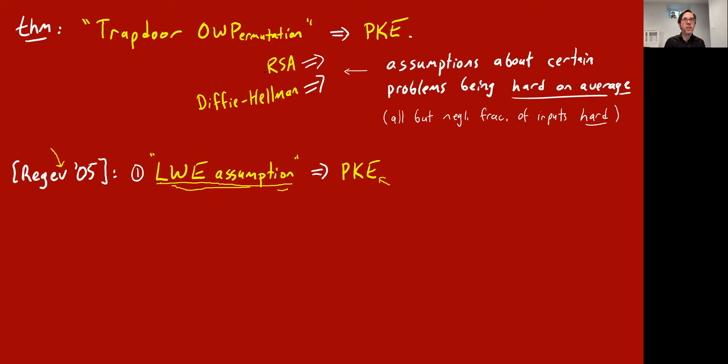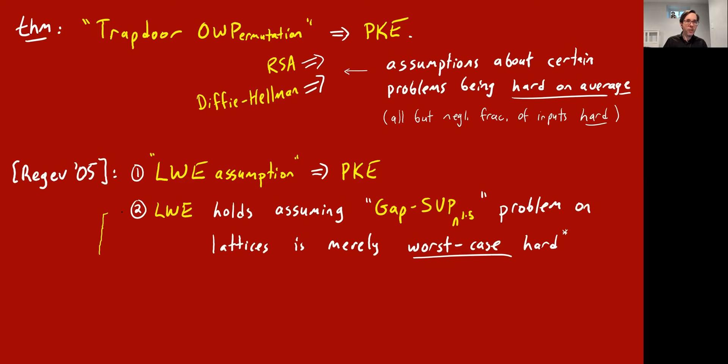People were like, okay, fine — we've seen that before; you make the assumption that some problem is hard and you get public key encryption. But what excited people the most was that he also showed another theorem: this LWE assumption — which is of the form that a certain problem is hard for random inputs — he proved it assuming some other problem is hard in the worst case. That was really exciting — it's the first time this worst-case to average-case hardness reduction seemed to work.